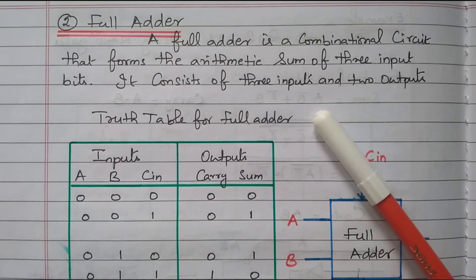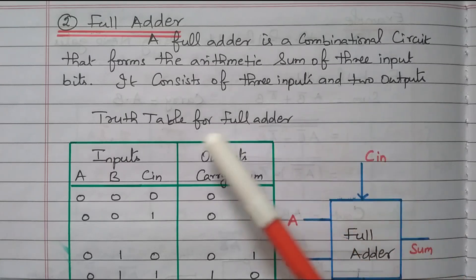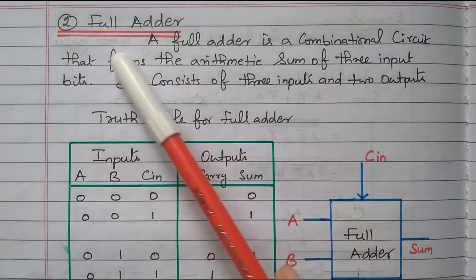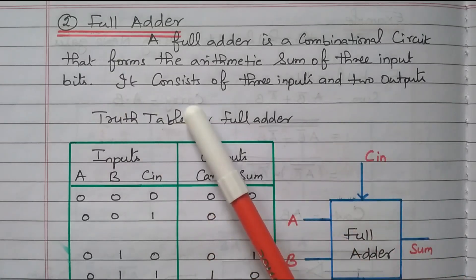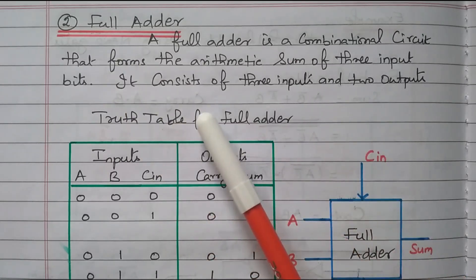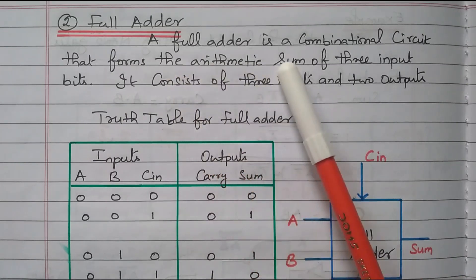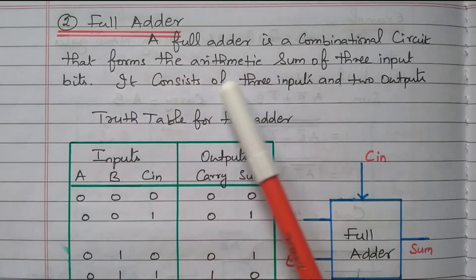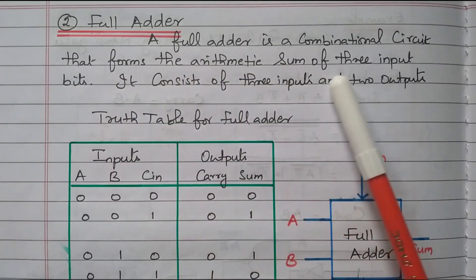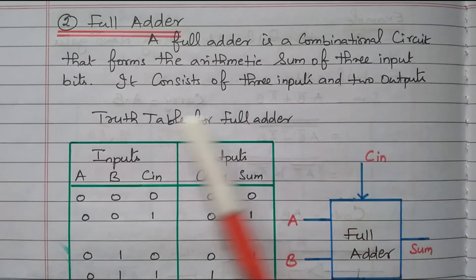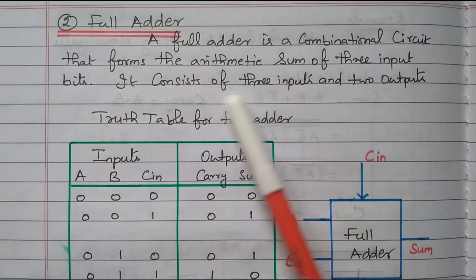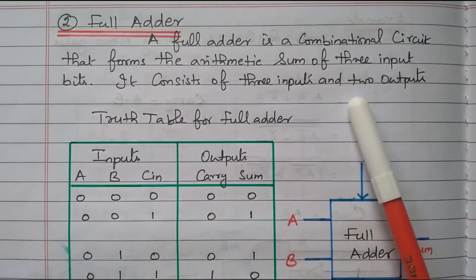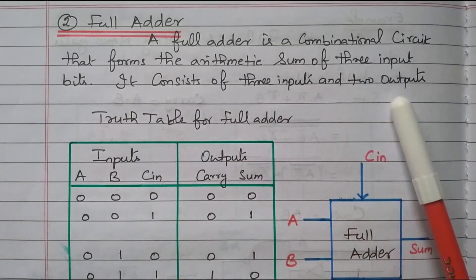We are going to construct the full adder by using two half adders. First we will see the details about the full adder, then we will go to the construction detail. The full adder is a combinational circuit that performs the arithmetic sum of three input bits. It consists of three inputs and two outputs.